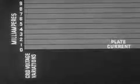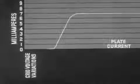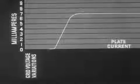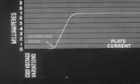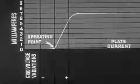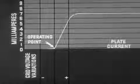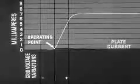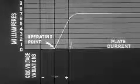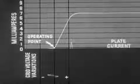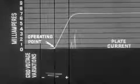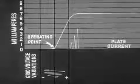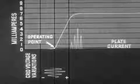The vacuum tube may also be operated as a detector. When used for this purpose, the grid bias is adjusted so that the operating point of the tube is just below the straight portion, or knee, of the characteristic curve. As a result, the positive half cycle of the radio frequency current in the grid circuit is amplified much more than the negative half of the cycle.